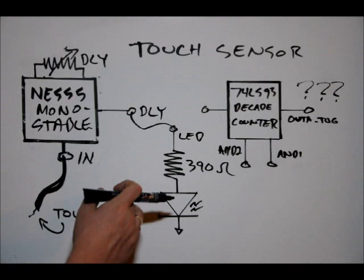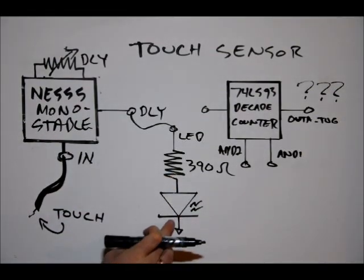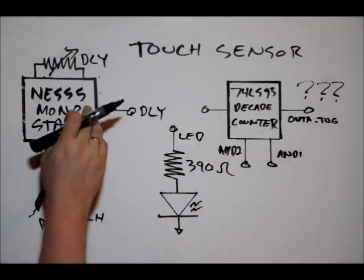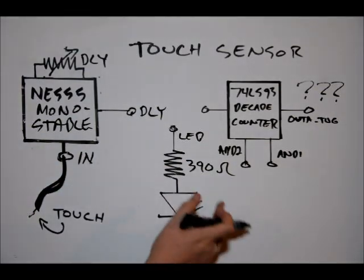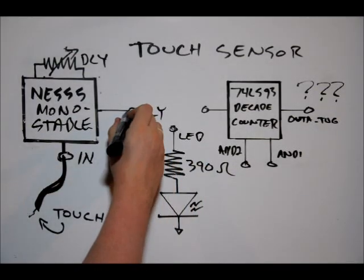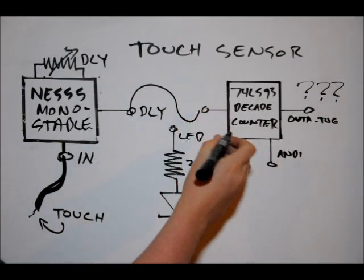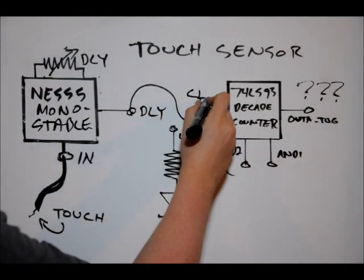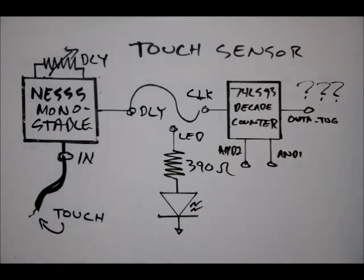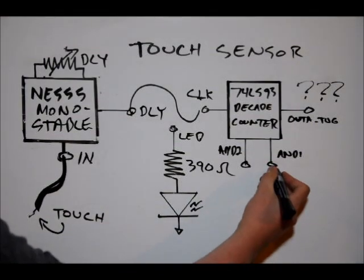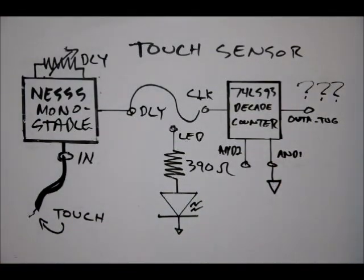Once we've calibrated our LED, once we've calibrated our 555 timer and we're happy with our pulse width indicated by the LED, we'll connect the CLK clock input of the 74LS93. Our AND1 and AND2 pins, we don't want to leave them floating. By default they're floating, which means the 74LS93 is always in reset mode. We want to connect either one of these pins to the ground line. It doesn't matter which one, you only need one connected to the ground line.